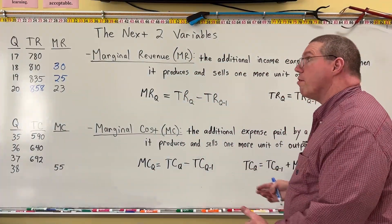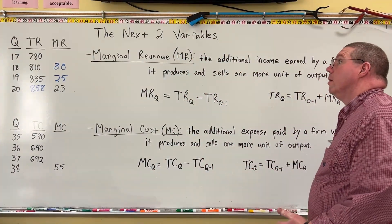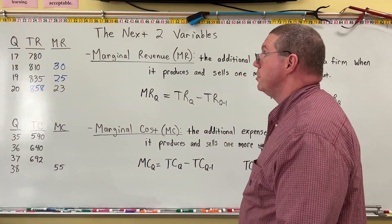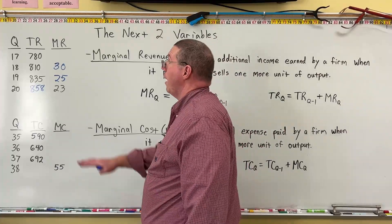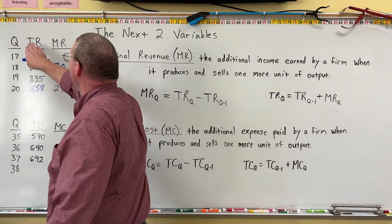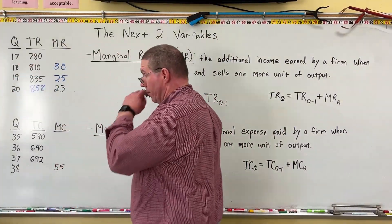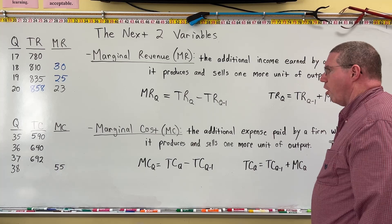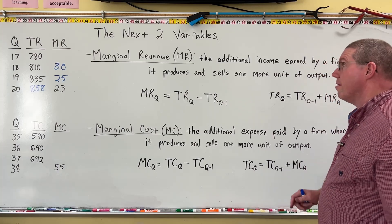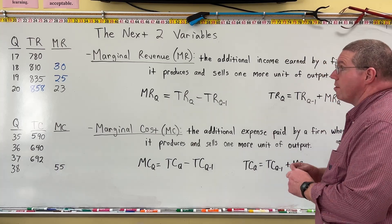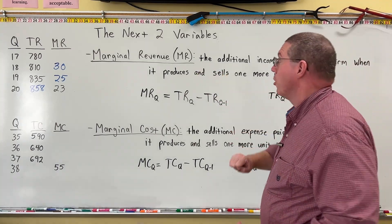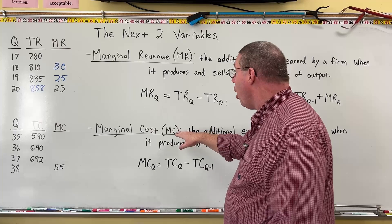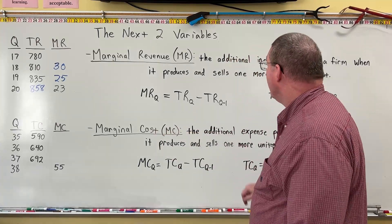You can see this is very similar to the relationship between marginal utility and total utility — only now it's marginal revenue and total revenue. So now let's talk about marginal cost. It's the exact same thing as marginal revenue, only it's the cost — it's related to total cost.